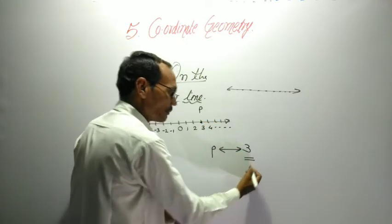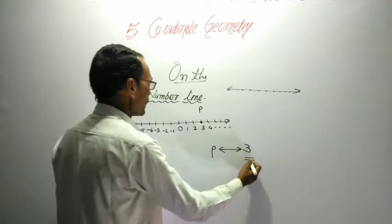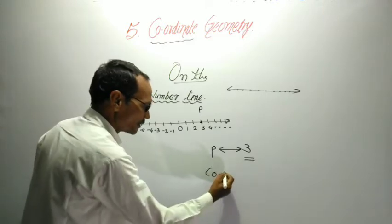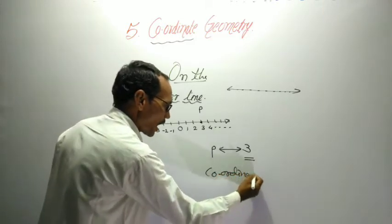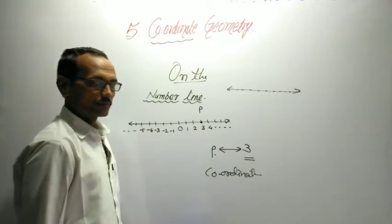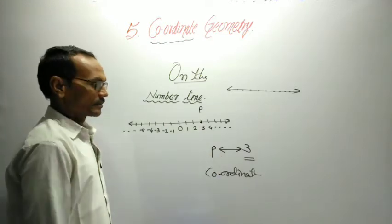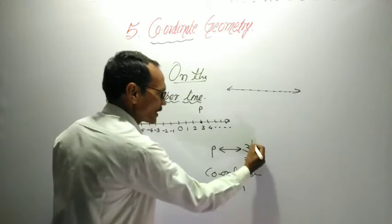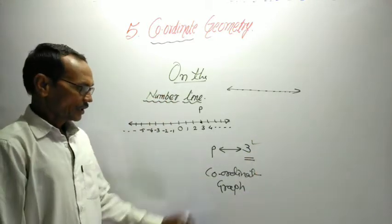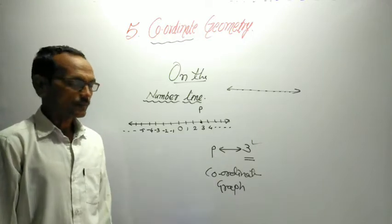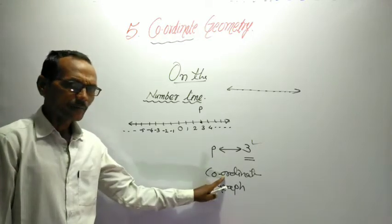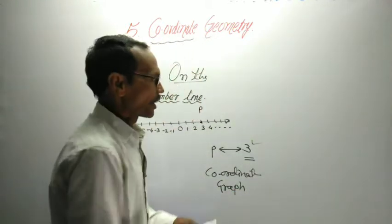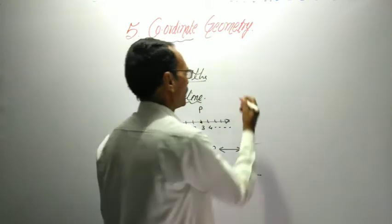Such a real number is known as coordinate of that point, and the point is known as graph of that real number. These are the 2 definitions. What is meant by coordinate? I can tell you, in short, you can write this as on the number line.